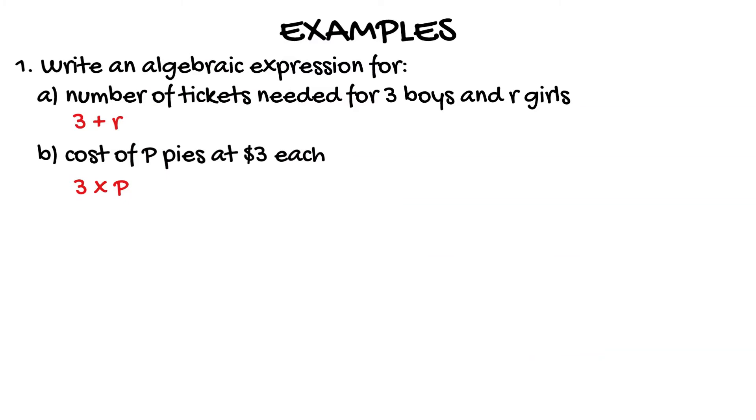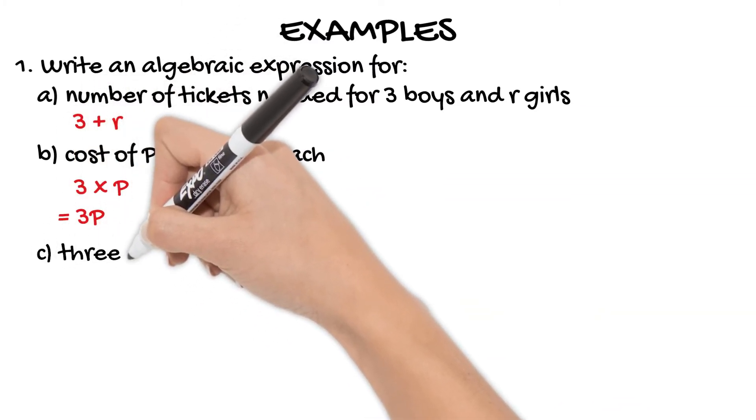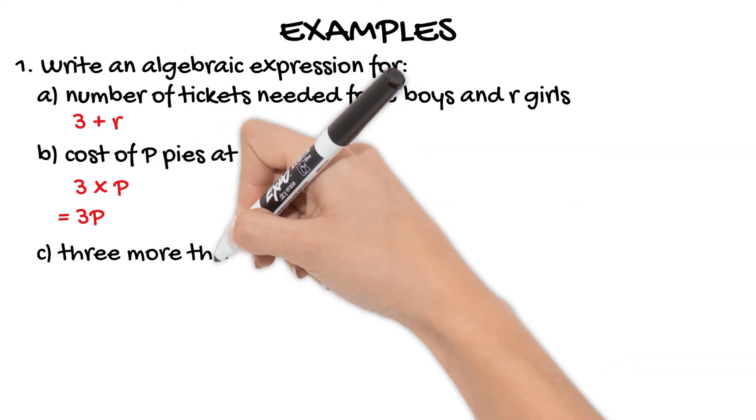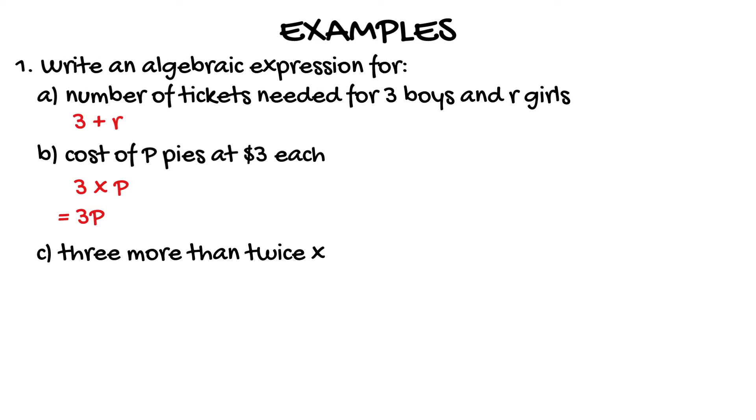So if we were asked to write an expression for three more than twice x, obviously twice x looks like 2 times x. So we'll write that as 2x and then plus 3 to get three more than that.